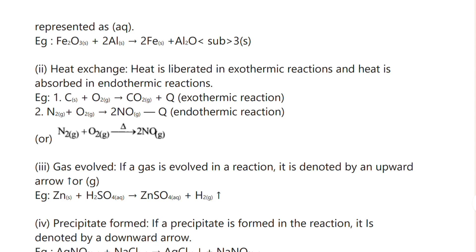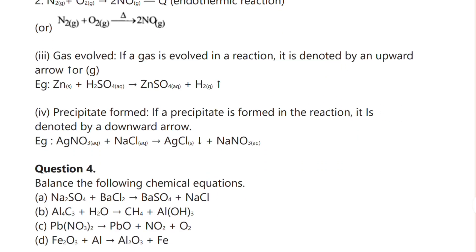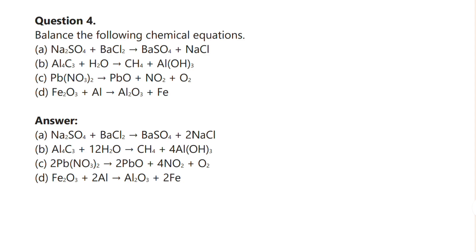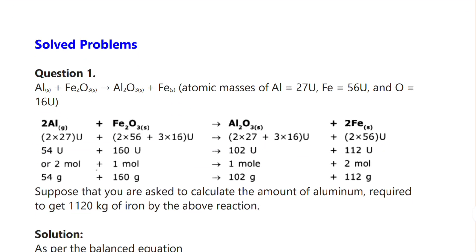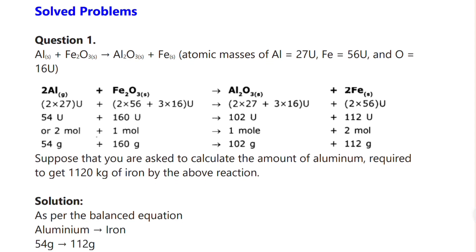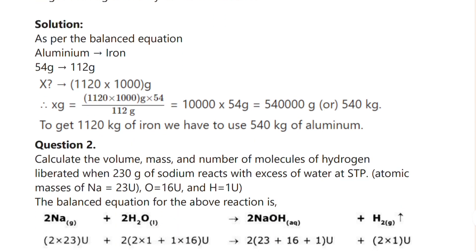Actually, in this chapter the main four-mark question is not a written answer type but rather balancing a chemical equation. They will give you a chemical equation and you have to balance it — this is the four-mark question. For example: 'Balance the following chemical equation' — that is how they will question you. A solved problem is also given here as an example.